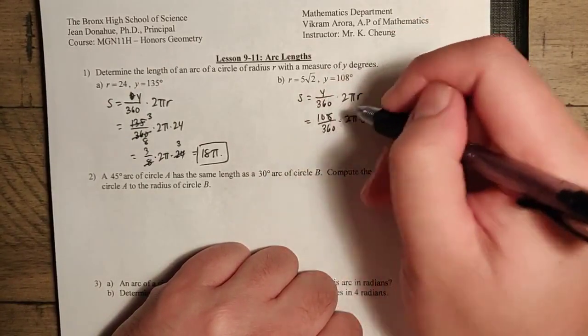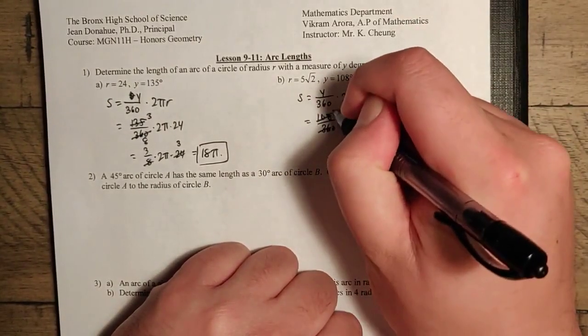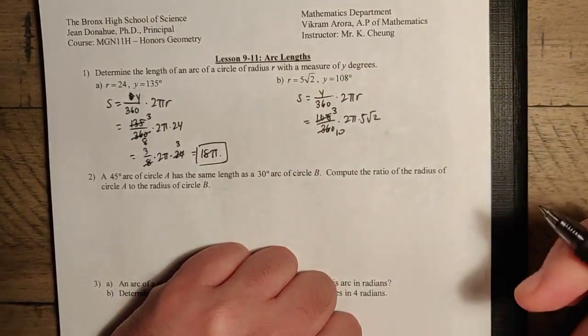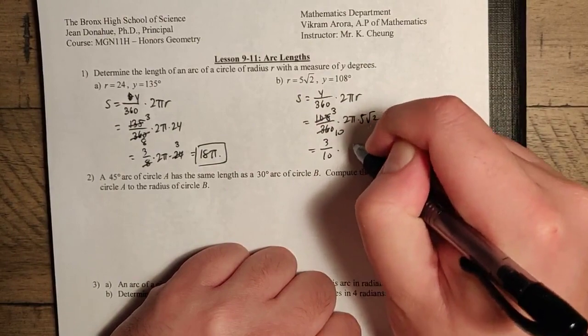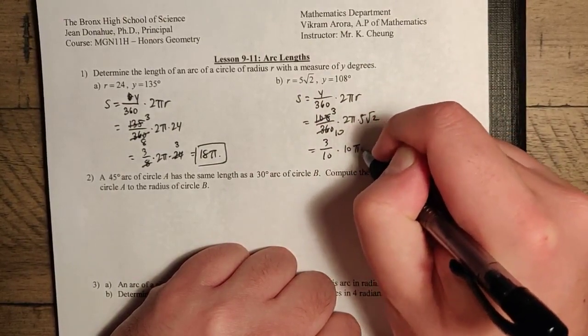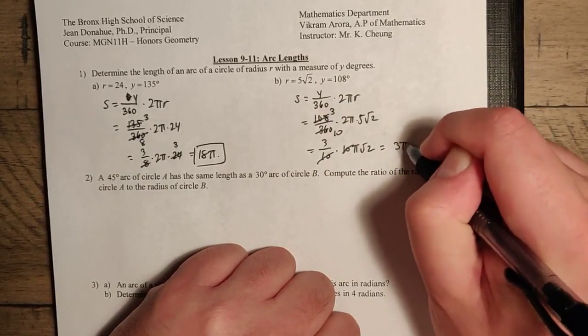So in this case, 108 and 360 have a common factor of 36. So we can yank out a 36 of each of these. So we have 3 over 10 here. So it's going to be 3 over 10 times 2 times 5, which is 10 pi radical 2. The tens are going to drop out. And we're left with 3 pi radical 2.